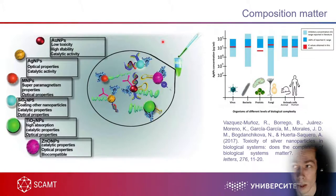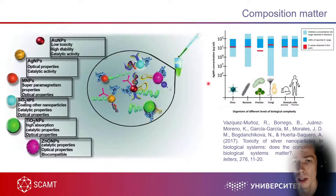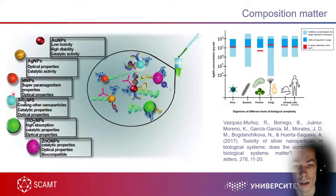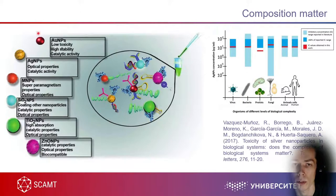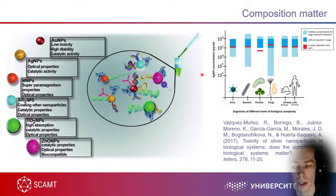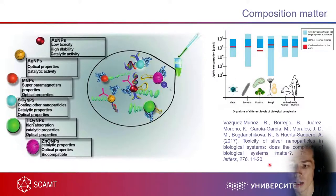Composition also matters. There are a lot of different elements that can be used to produce nanoparticles: historically gold, silver, magnetic particles from iron or nickel, silicon nanoparticles, titanium, zinc oxide, and many more. All of these particles probably have different targets in a cell — some will bind to mitochondria, some to cell membranes, some to different proteins. All of these interactions need to be studied in order to use these nanoparticles in different biological applications.